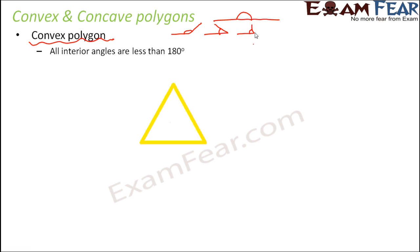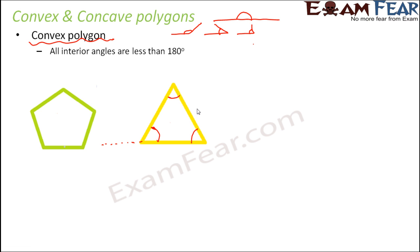Let us look at some examples of convex polygons. Here is a triangle — its interior angles are this one, this one, and this one, and all of these are less than 180 degrees — in fact they are even less than 90 degrees. Now look at this pentagon: its interior angles are all less than 180 degrees.